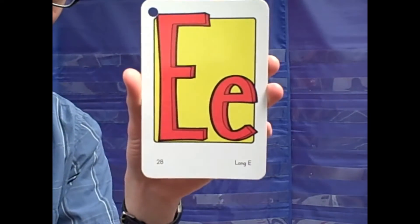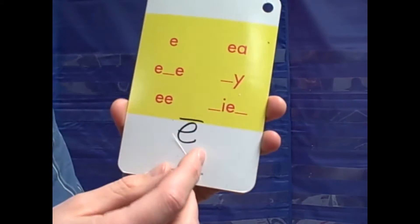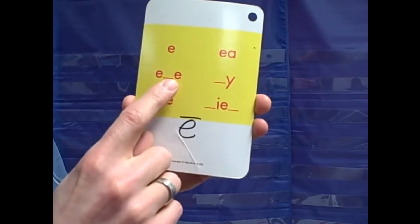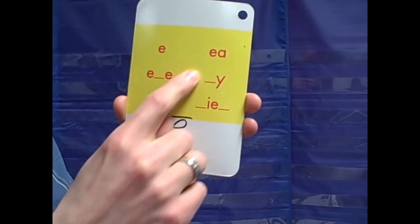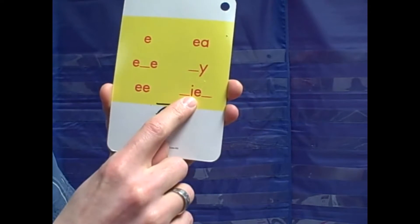Next, we have the sound spelling card for long E. E has many spellings. There are six here, and I will show you a picture for all six of them. E spelled E, E spelled E consonant E, E spelled EE, E spelled EA, E spelled Y, E spelled IE.